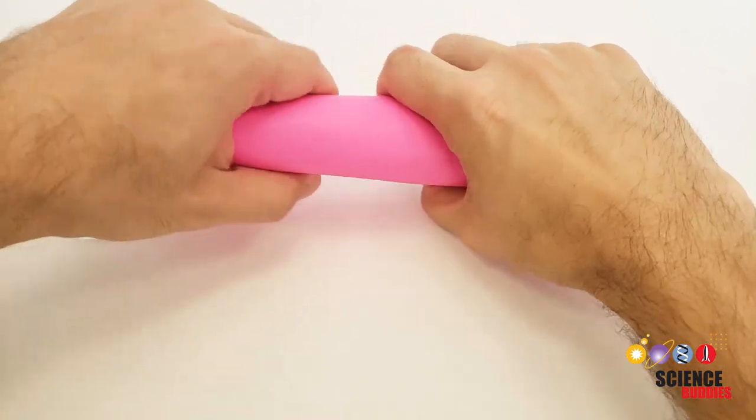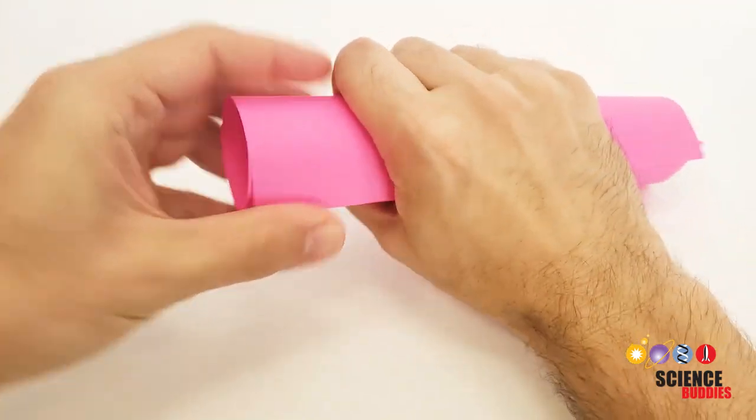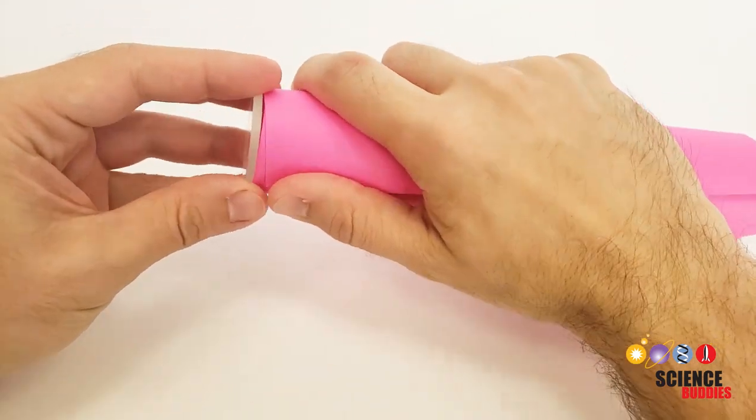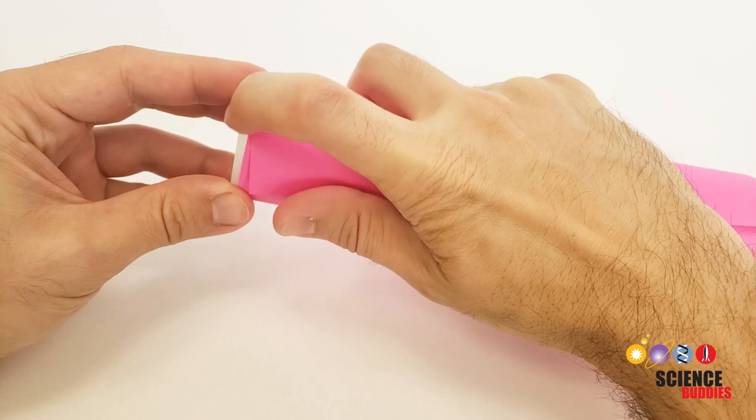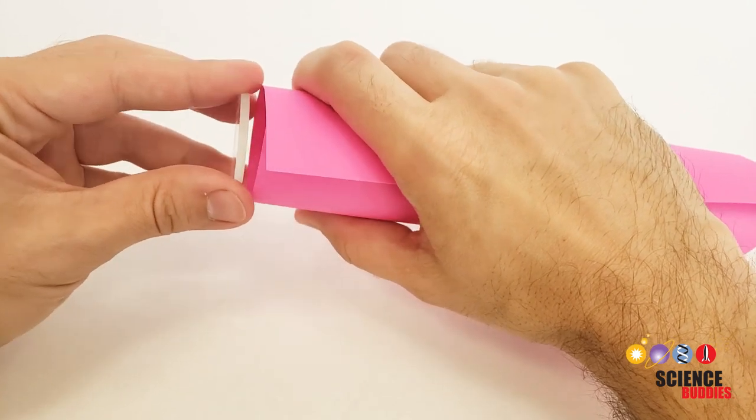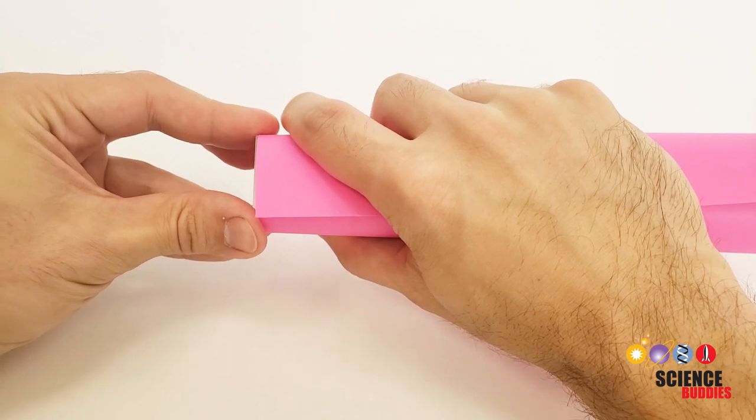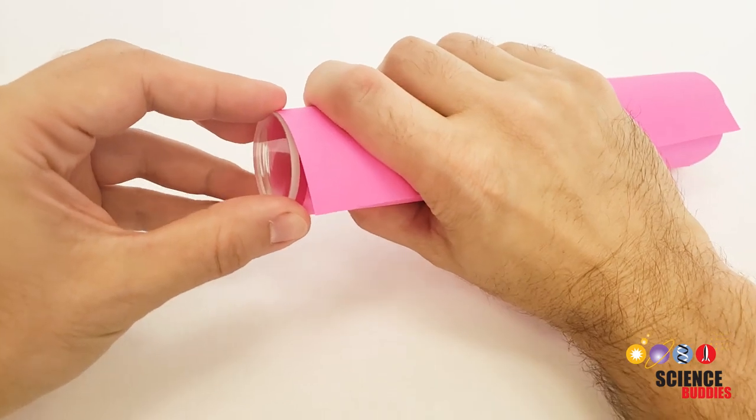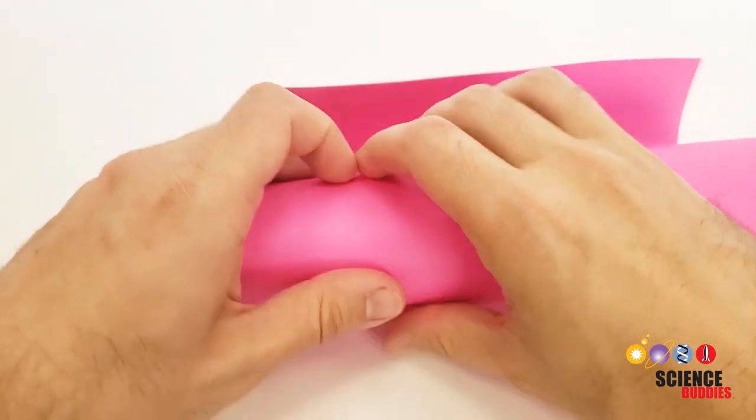Now this is important. You do not want the lens to fit inside the tube. You want the outer diameter of the tube to line up with the outer diameter of the lens and that's going to allow you to tape the edge of the lens to the outside of the tube. If the lens fits inside the tube then you're not going to have a good surface to attach the tape to. So roll the tube up so it is the same diameter as the lens.